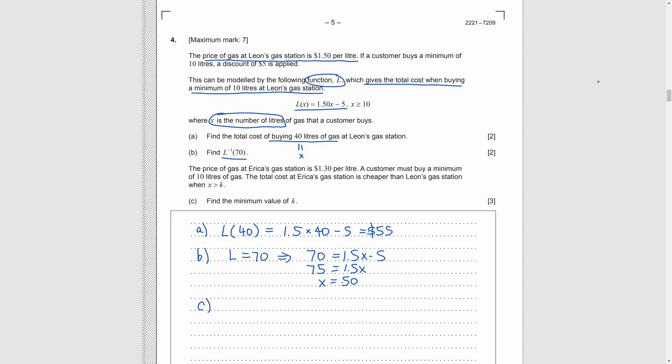Part C, the price of gas of another station is 1.3 per liter. And the cost in this station is cheaper than that of the original one, when x is greater than k. Obviously, we need to set the formula of this station is smaller than that of the original one. The total cost of the gas is just 1.3x, which is smaller than 1.5x minus 5. After we solve this inequality, we get x is greater than 25. So, k is just 25.